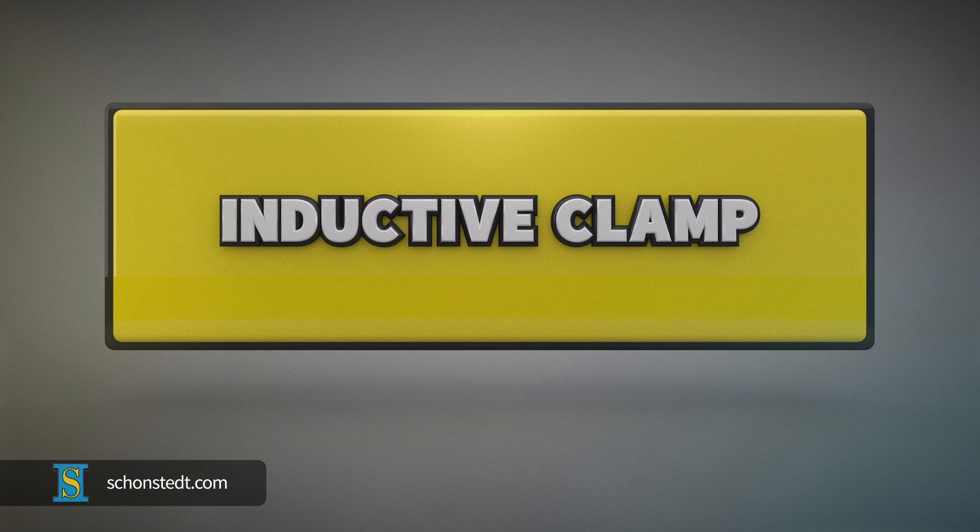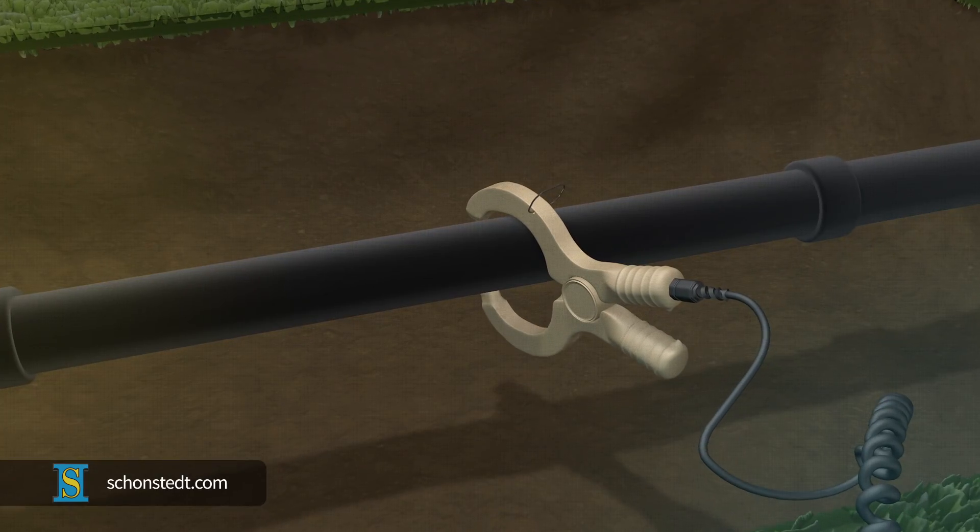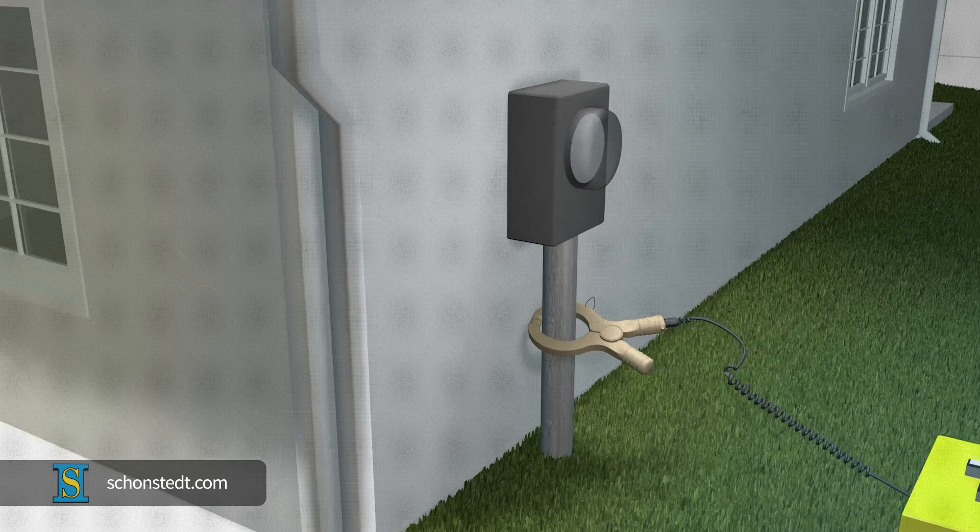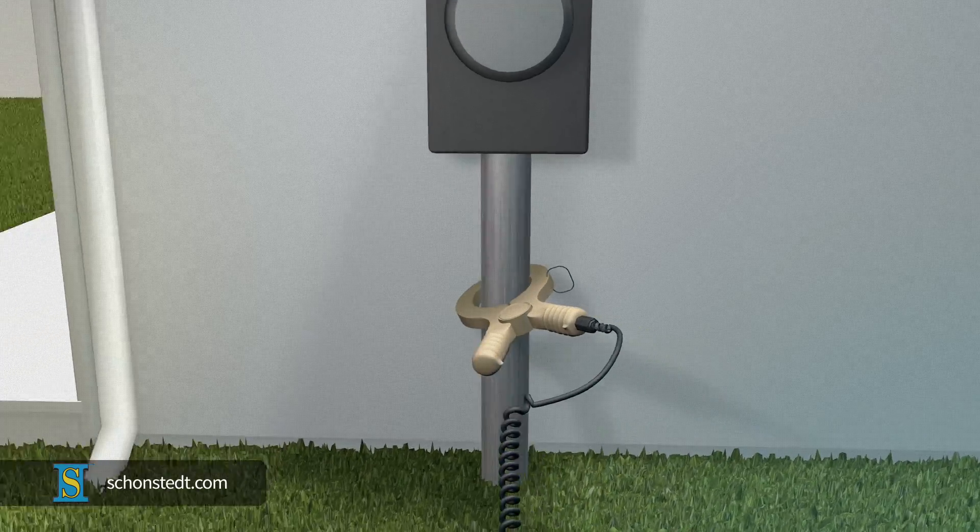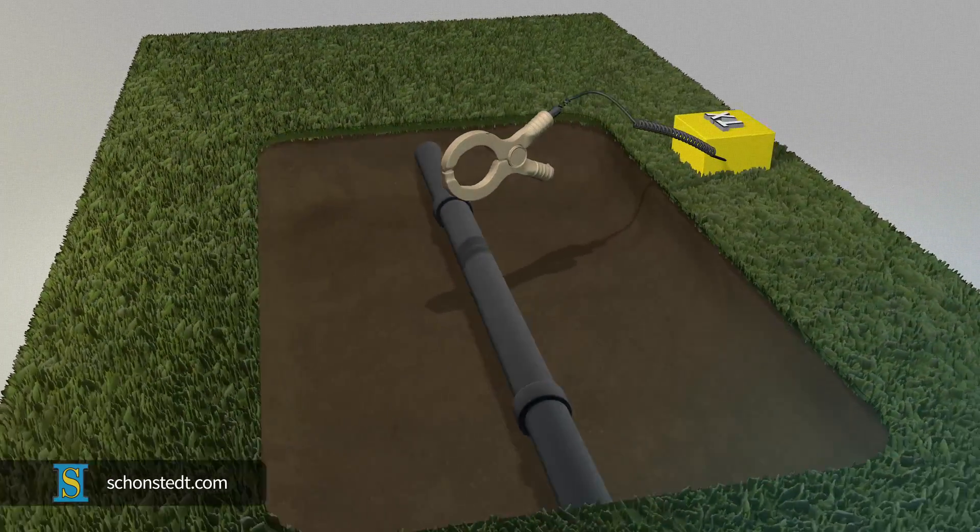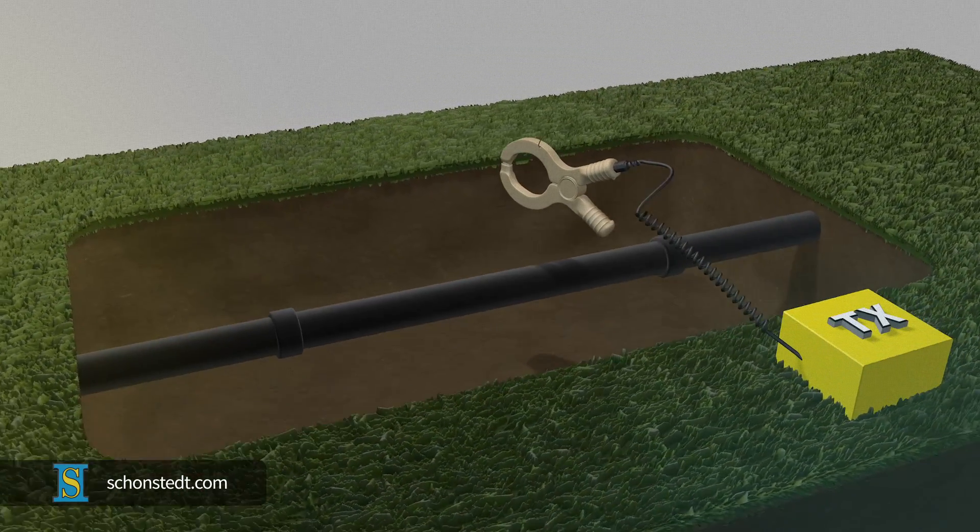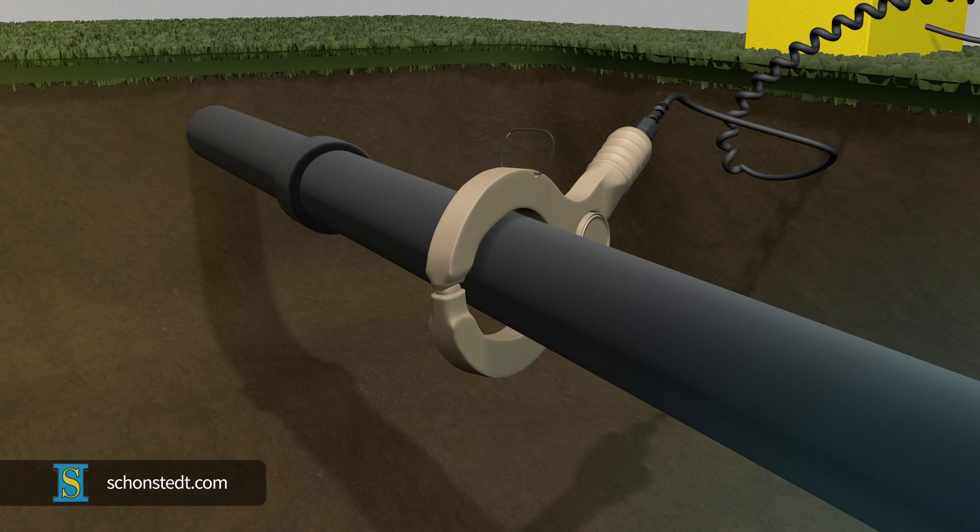The inductive clamp method of connection requires you to apply a clamp around the pipe or cable. In some cases, the pipe or cable can be found next to buildings or on utility poles. Sometimes you'll need to dig to expose the line and be able to apply the clamp. It must close fully around the conductor.